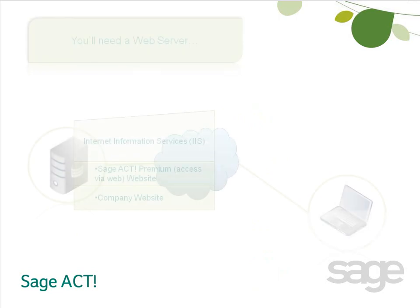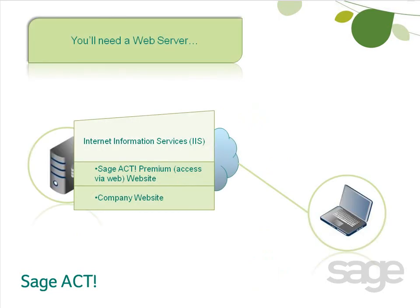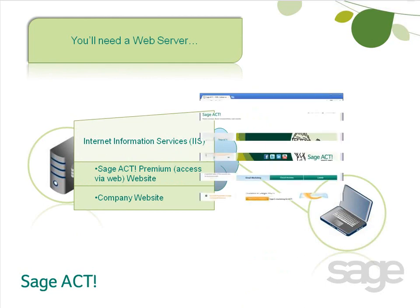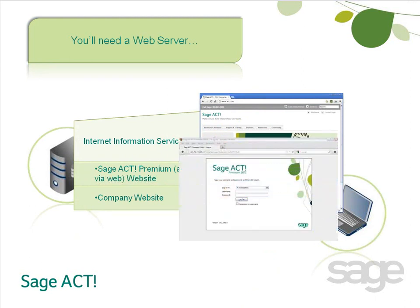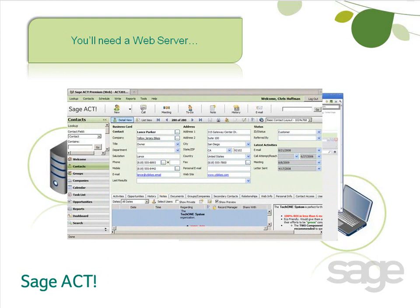The first thing you'll need is a web server. Web servers enable data to be stored on a server and accessed via the internet by various web browsers. As you know from browsing the internet, some web pages are really simple, just displaying text and images, while others, like Sajak Premium Access via Web, may allow you to log in, read data, and enter data about contacts, opportunities, and more in your Sajak database.